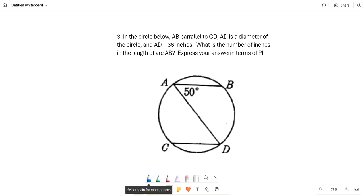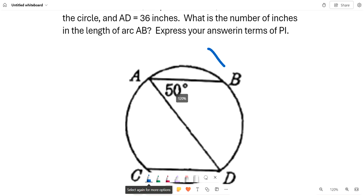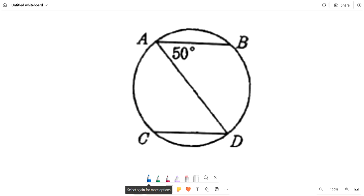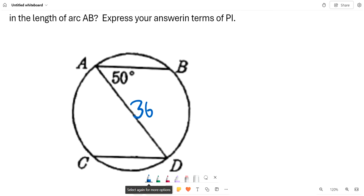So let's see over here. First we find out the whole circumference, and since we know AD is 36, then we know that the whole circumference equals 36 pi.